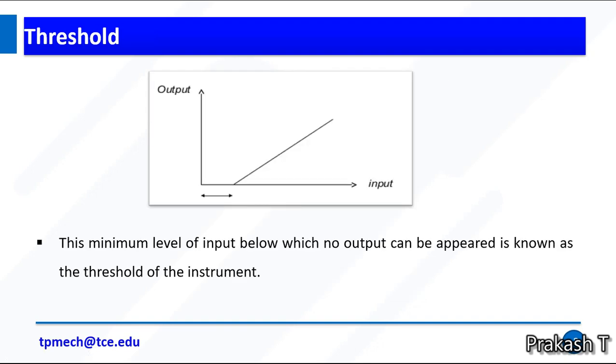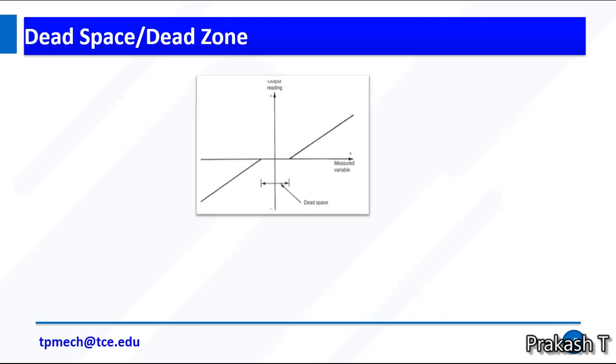Threshold: the minimum level of input below which no output can be detected is known as the threshold of the instrument. For example, if I give the input zero, it won't give any output. I keep on increasing my input until it reaches a threshold, and then it will give output. This is threshold.